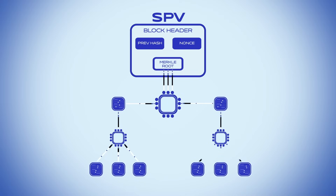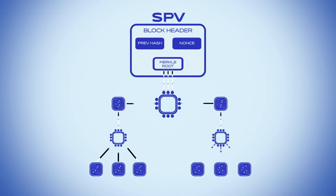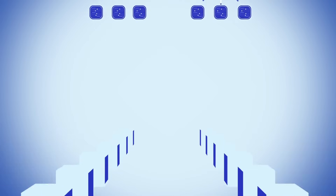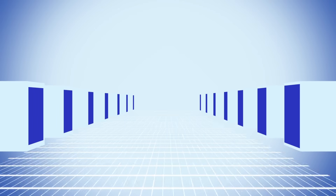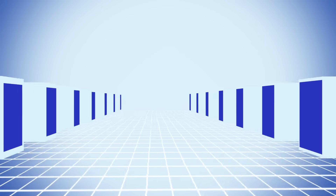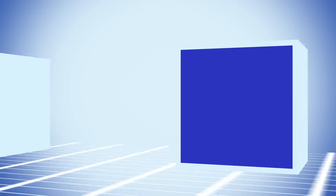These concepts might sound technical, but they're easy to understand. Imagine the blockchain as a long hallway full of rooms — blocks — where each room has a wall of safety deposit boxes.